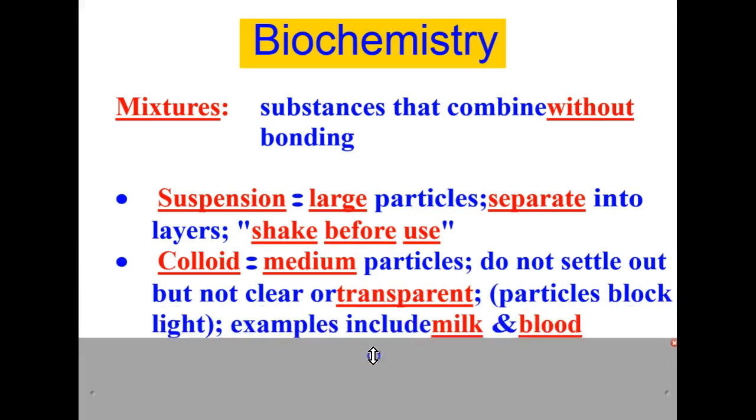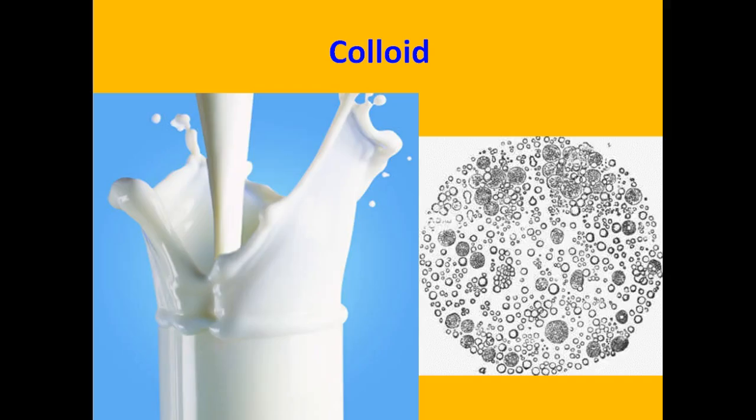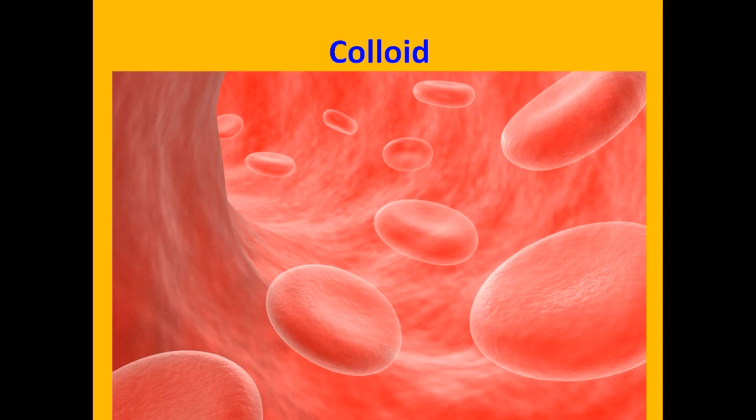Colloids usually contain medium-sized particles, and they do not settle out, but they are not clear or transparent either. In other words, the particles block the light and they take on the color, usually, of their medium particles. Examples include milk and blood.